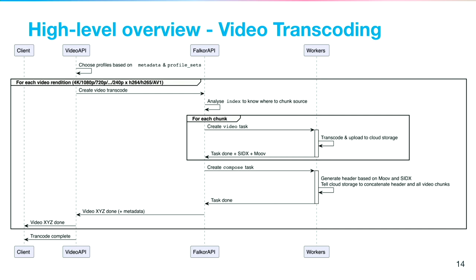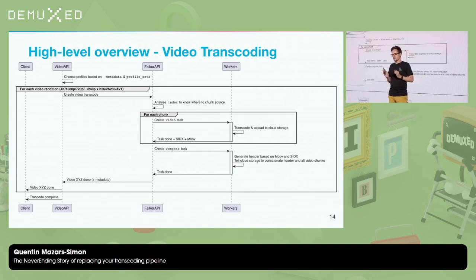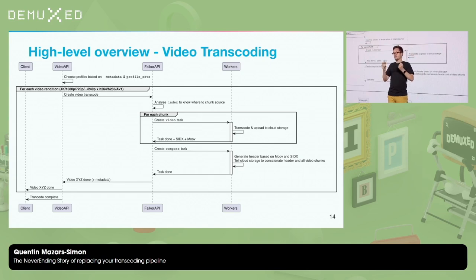The next step is video transcoding. The video API, based on that metadata, decides what renditions the output should have — based on metadata and profile sets. For example, if you have a 720p video, we don't want to make a 1080p version out of it, and if it's not HDR, don't make HDR renditions. For each output the video API decides, we tell the Filecore API to make a video transcode. The Filecore API uses the indices from the previous step to know where to chunk the video, and for each chunk — we decided on one-minute segments — it makes a task to be transcoded.